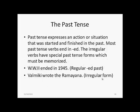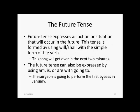The past tense expresses an action or situation that was started and finished in the past. Most past tense verbs end in ED, but irregular verbs have special past tense forms which must be memorized. For example, 'World War II ended in 1945' — END is regular and ends with ED. 'Valmiki wrote the Ramayana' — WRITE is an irregular verb, so the past form is not WRITED but WROTE. The future tense expresses an action or situation that will occur in the future, formed using WILL or SHALL with the simple form of the verb, for example, 'this song will get over in the next 2 minutes.' It can also be expressed using AM, IS, or ARE with GOING TO, for example, 'the surgeon is going to perform the first bypass in January.'